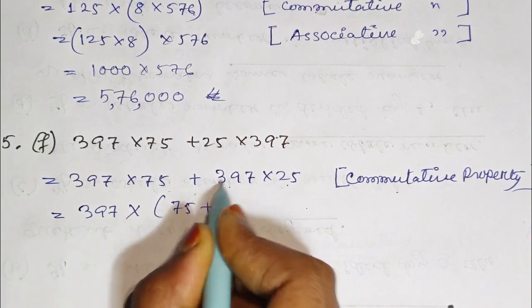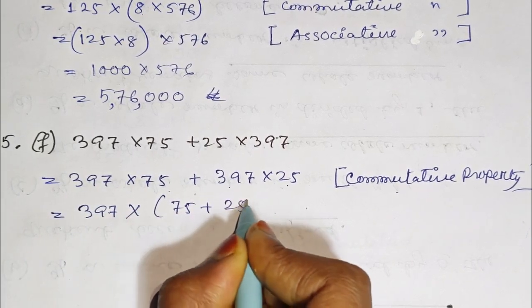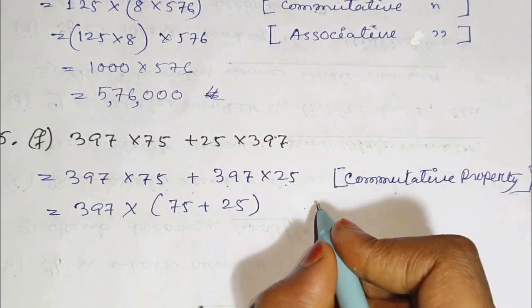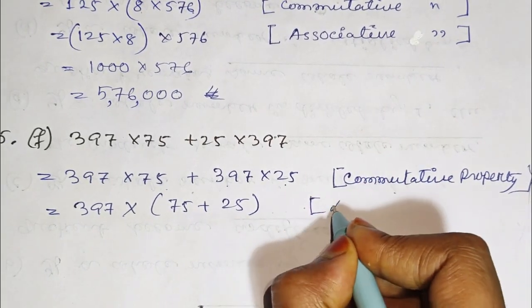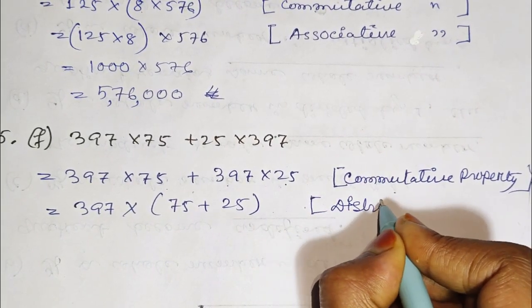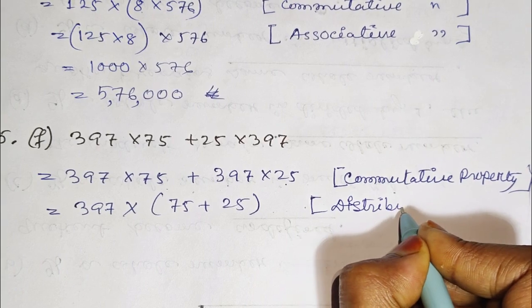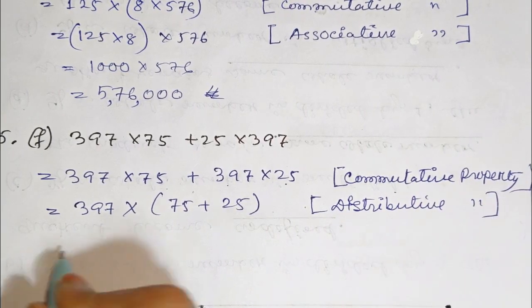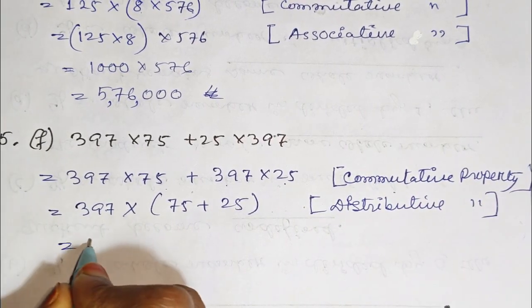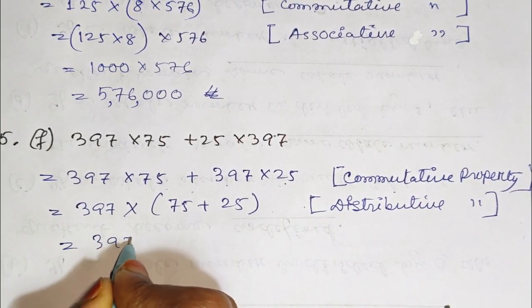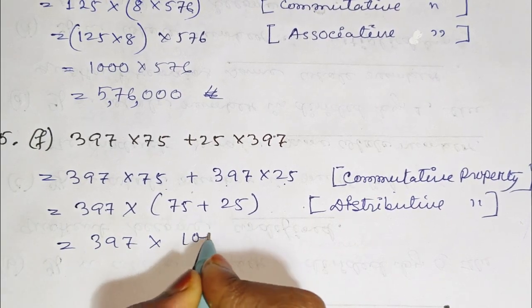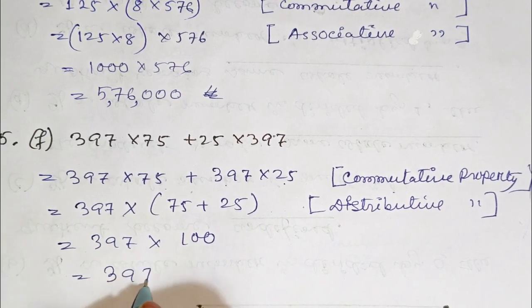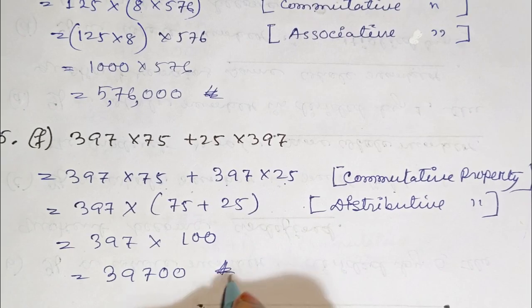We have 25 plus 25. This is what we call the distributive property. So 397 multiplied by 100 equals 39700. That is the answer.